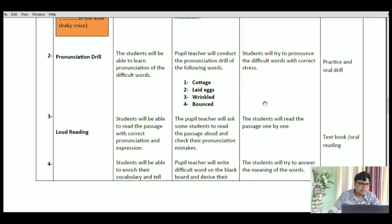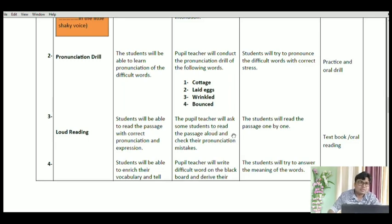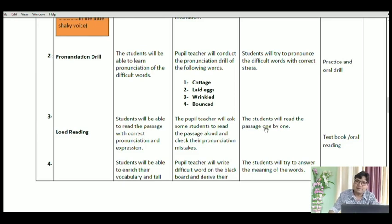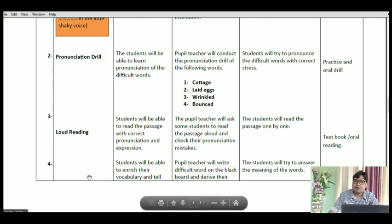Now the third teaching point is loud reading. Students are expected to read the passage with correct pronunciation and expression. The pupil teacher will ask some students to read the passage aloud and check their pronunciation mistakes. Students are allowed to speak loudly, holding their books and speaking every word clearly. You can do this with four or five students reading the passage one by one. The method or aid used here is the textbook with oral reading.